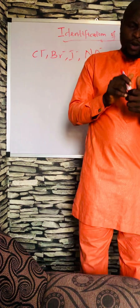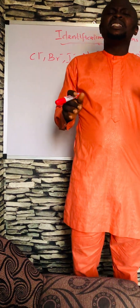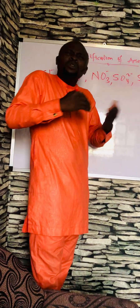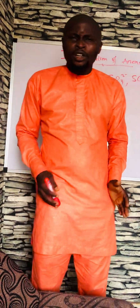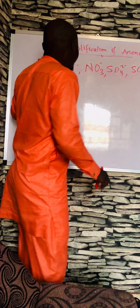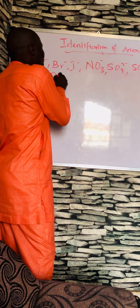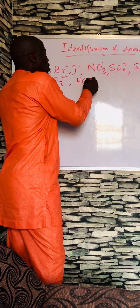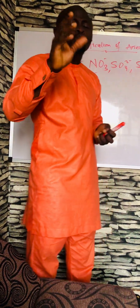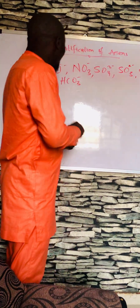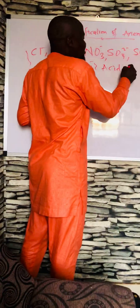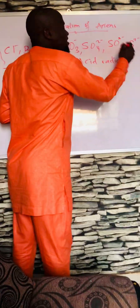Generally speaking, these anions are broadly divided into three. You can see them here — there are hosts of others, not just these. We can broadly divide them into three. Apart from calling them anions, we also call them acid radicals.